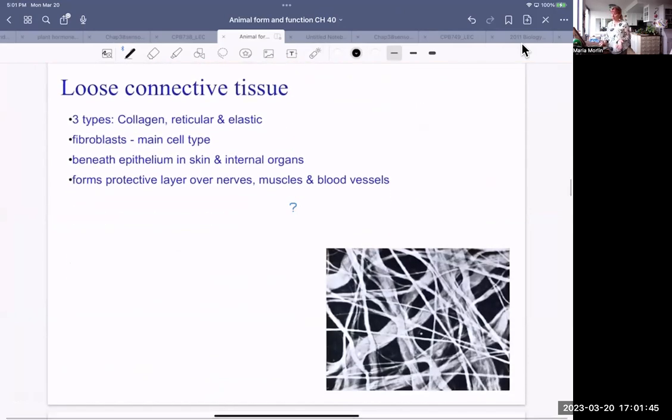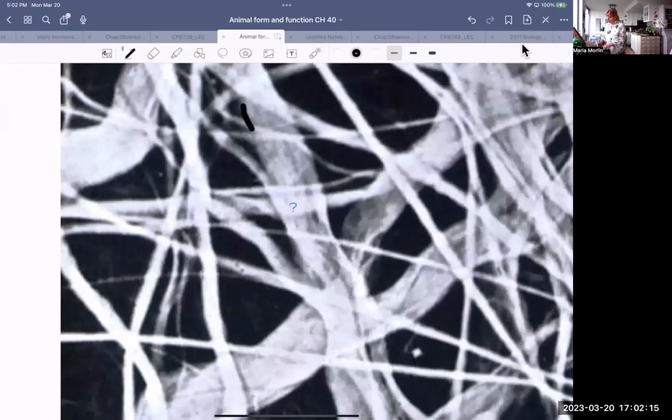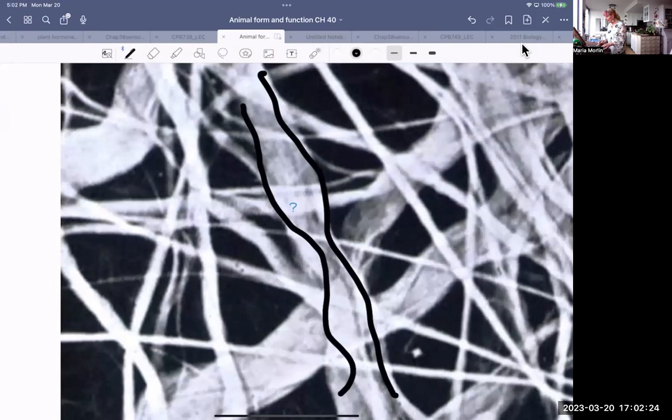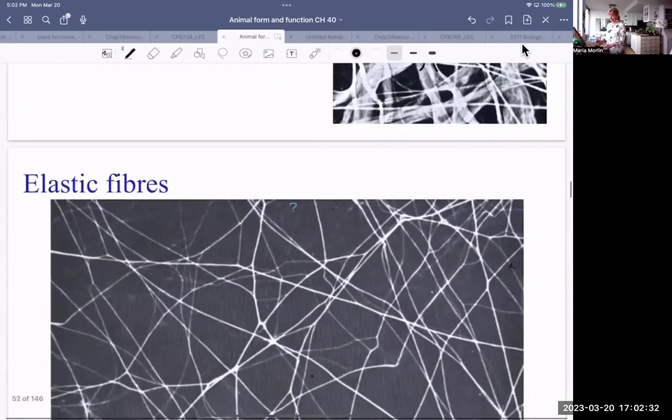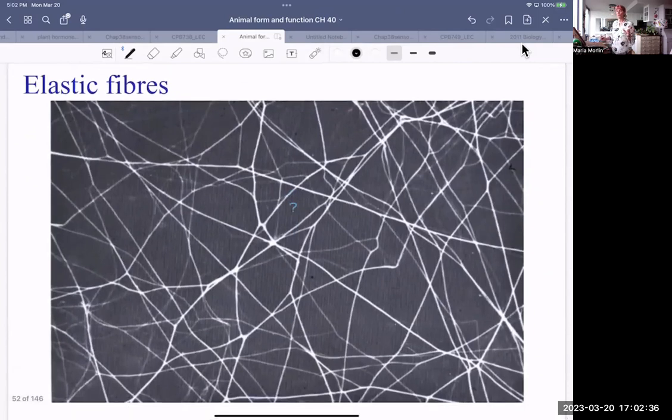So let's take a look at loose connective tissue. There's three kinds: collagen, reticular, and elastic. The type of cell, the main type of cell, there's more than one, are fibroblasts. You find it beneath that epithelial tissue in the skin. You find it around your organs, keeping them in place, so they're not like ricocheting off your abdominal wall for example. And they form protective layers over nerves and muscles and blood vessels. And there are various tissues. So the largest fibers like this one here is a collagen fiber. They're the thickest ones. Other ones may be reticular fibers or elastic fibers. So elastic fibers are very thin. And you find those where you need more flexibility, like under your skin for example. So your skin is flexible, but it doesn't break if you pull it.